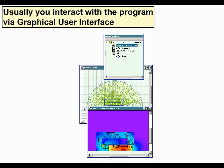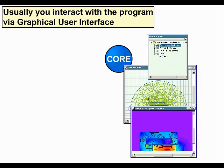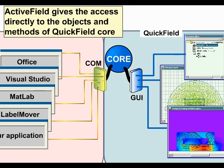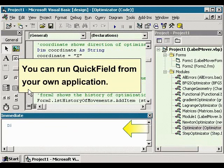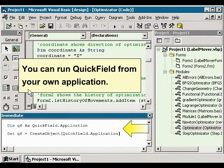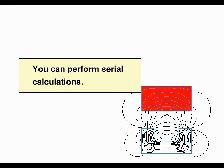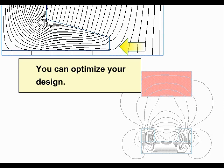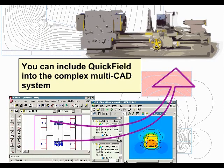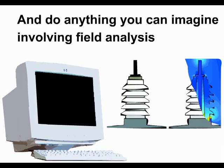Usually you interact with the program via a graphical user interface. ActiveField gives access directly to the objects and methods of QuickField Core. You can run QuickField from your own application, perform serial calculations, optimize your design, include QuickField into the complex multi-CAD system, and do anything you can imagine involving field analysis.